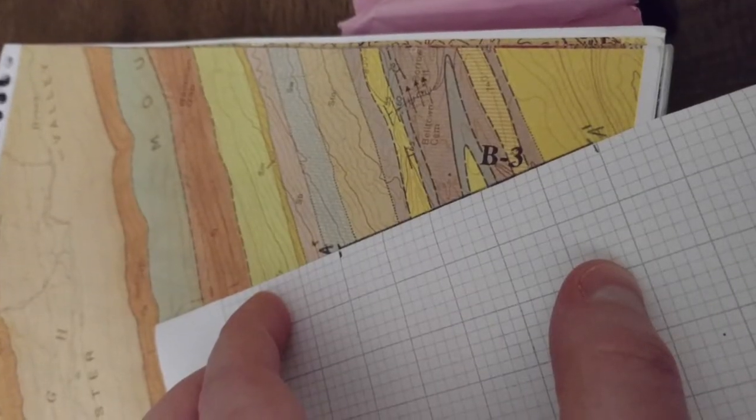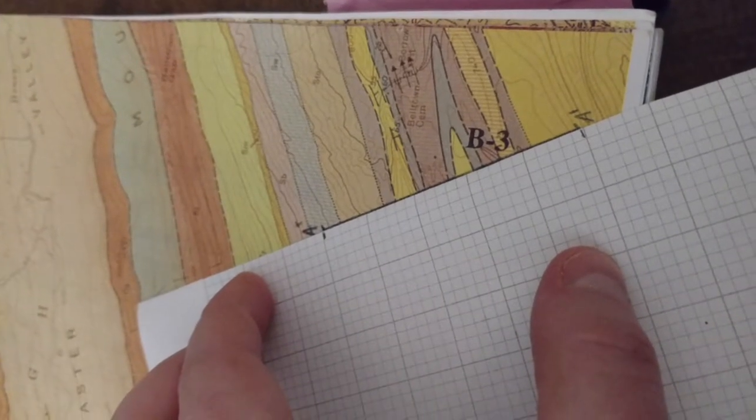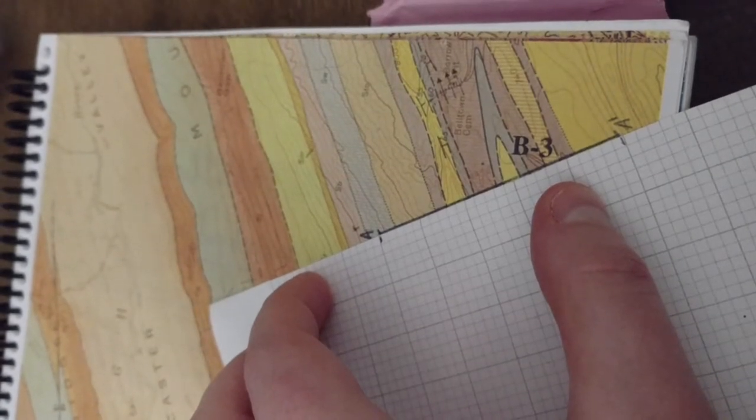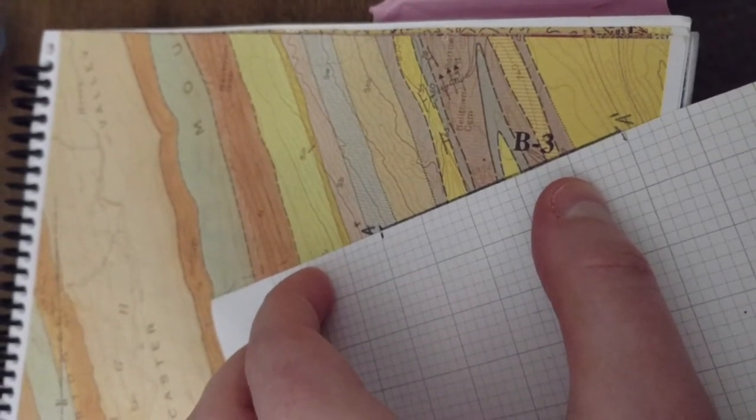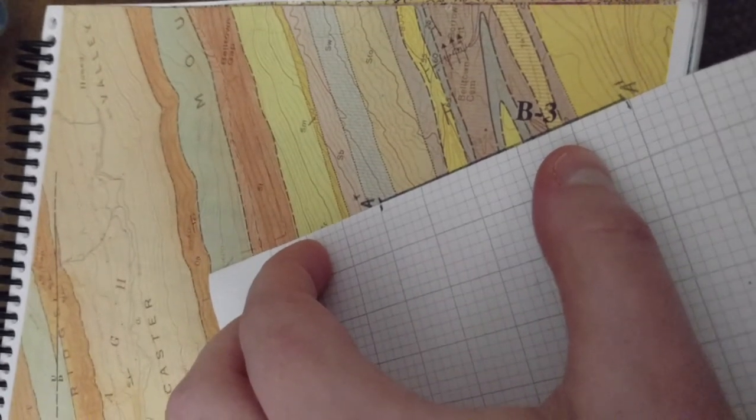And the first two things I've marked are my location of A and A-prime on that piece of paper. And now I'm going to go through and I'm going to mark all the locations of the major contour intervals and some of the minor contour intervals.